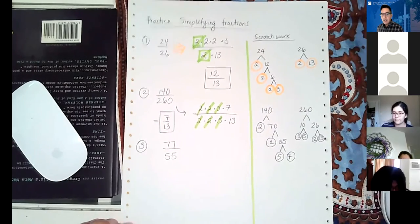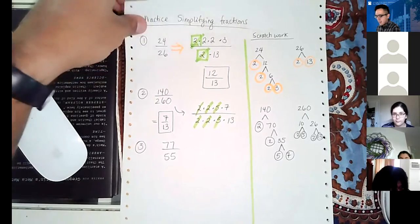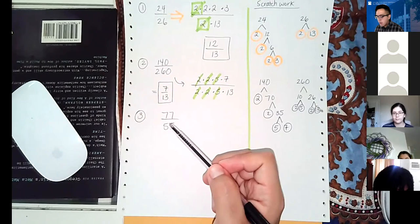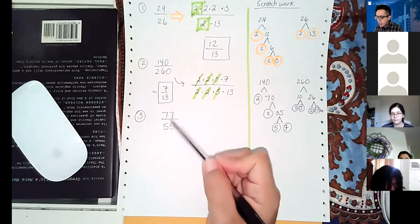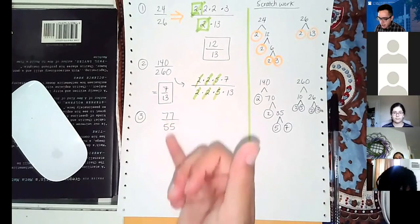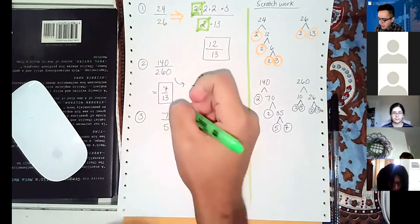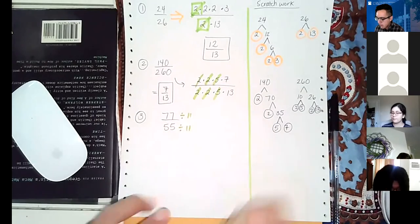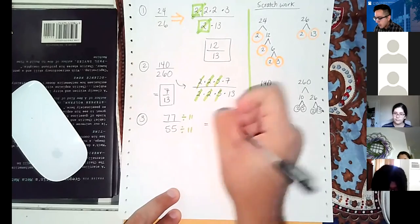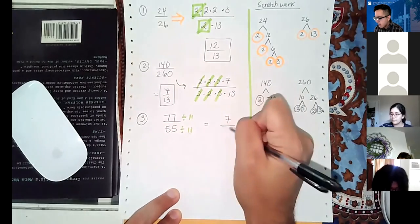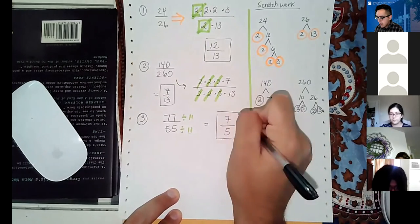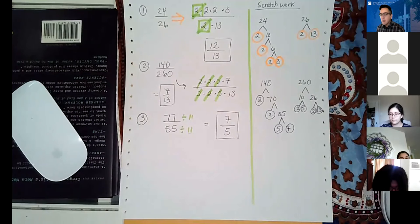For 77 over 55, you might notice that 11 goes into both, so you can divide 11 out of the top and the bottom without needing the full prime factorization tree. 77 ÷ 11 = 7 and 55 ÷ 11 = 5, so the answer is 7 over 5. Both seven and five are prime, so we can't reduce further — that's our final answer.